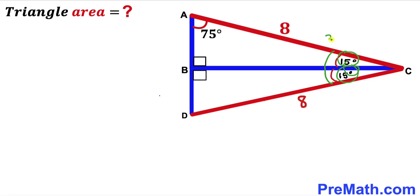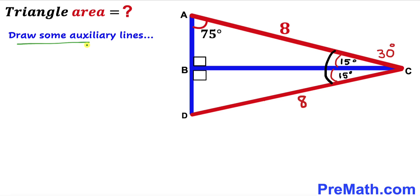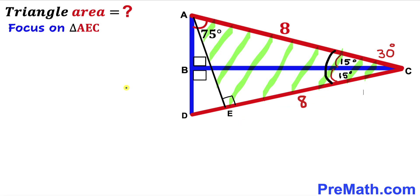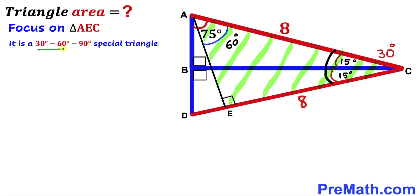The whole angle ACD is the sum of the two individual angles: 15 degrees plus 15 degrees gives us 30 degrees. So this whole angle turns out to be 30 degrees. We are going to draw some auxiliary lines, so we have dropped this perpendicular AE onto base CD. Now focusing on right triangle AEC, this angle is 90 degrees and this is 30 degrees, so the remaining angle is 60 degrees — this is our 30-60-90 special triangle.